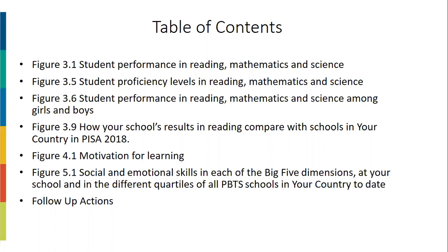Figure 3.1: Student Performance in Reading, Mathematics, and Science. Figure 3.5: Student Proficiency Levels in Reading, Mathematics, and Science. Figure 3.6: Student Performance in Reading, Mathematics, and Science among girls and boys. Figure 3.9: How your school's results in reading compare with schools in your country in PISA 2018. Figure 4.1: Motivation for Learning. Figure 5.1: Social and Emotional Skills in each of the Big Five dimensions. Finally, we will make some suggestions on what follow-up actions you could take next. Throughout the presentation, we will refer to School Z, a fictitious school that took part in the PISA-based test for schools last year, from Country Z, also a fictitious country. In your school report, School Z refers to your school, and Country Z refers to your school's country.